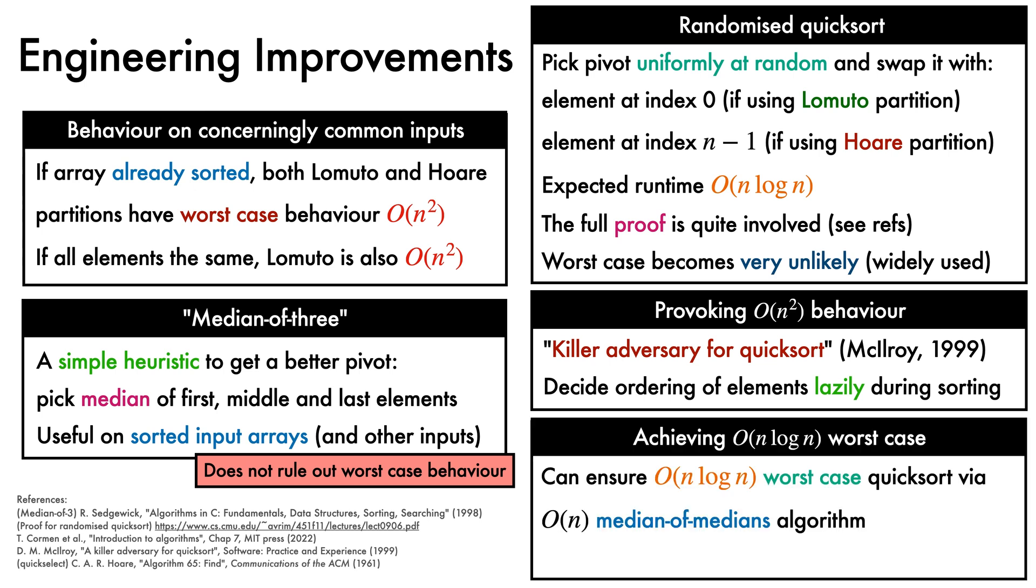Nevertheless, we can, if we wish, ensure big O of n log n worst case behaviour by using the median of medians algorithm to select the pivot. However, in practice, this leads to an implementation that is very slow, and so it is not widely used at present.